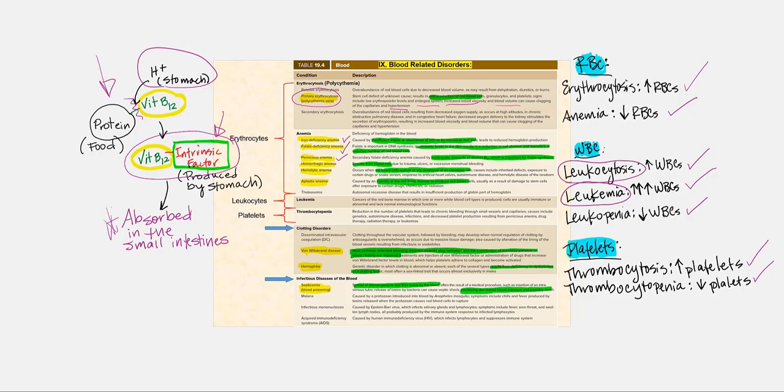So if our stomach is unable to produce intrinsic factor, then we will not have the ability to absorb this vitamin. And vitamin B12 is also necessary for DNA synthesis, which again happens before cell division.